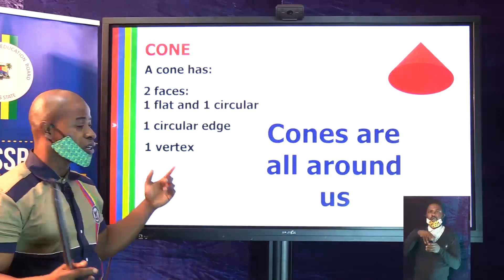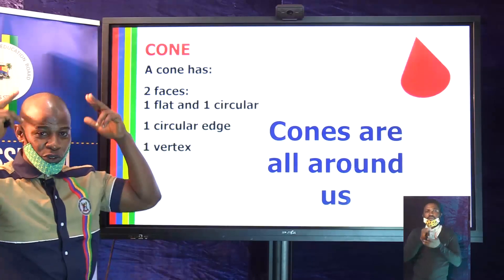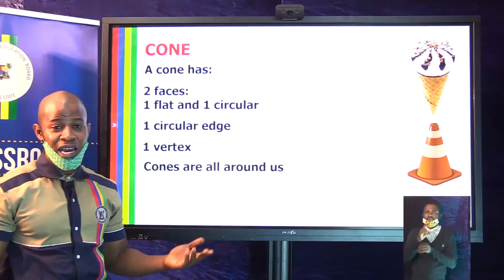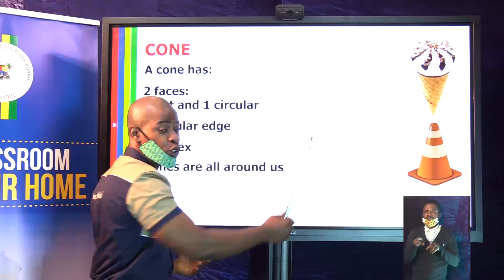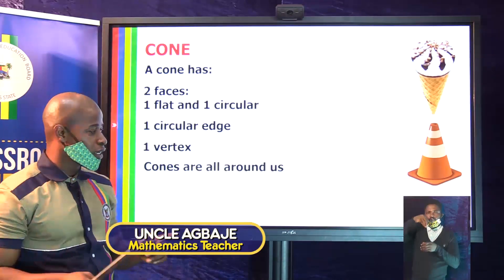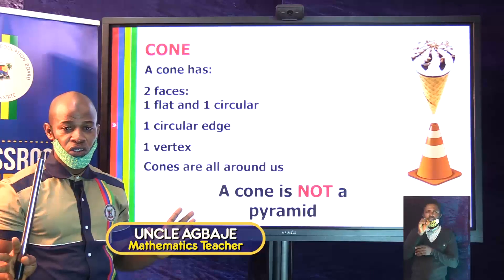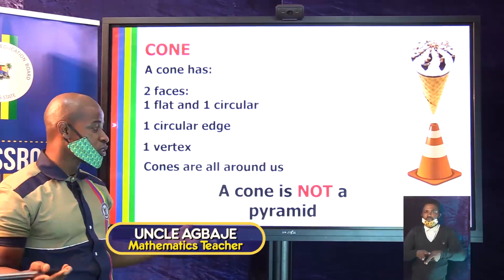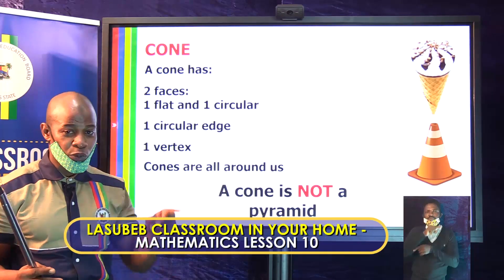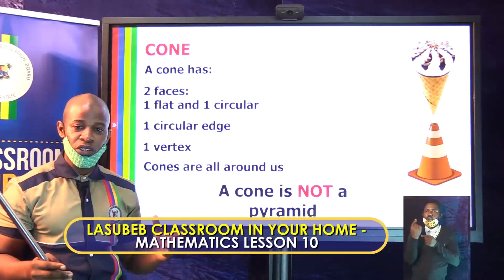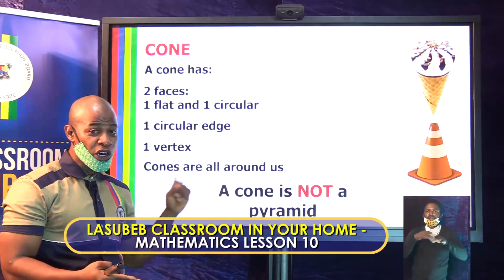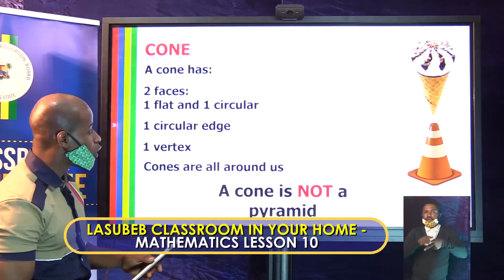Cones are all around you. That Christmas cap that tapers towards the top is a cone. Ice cream cones are also in the shape of a cone, as are the traffic markers that LASMA officials use to demarcate lanes. Important thing to note: a cone is not a pyramid, because at the base of a cone you have a circle, and a circle is not a polygon. A polygon must have straight sides.